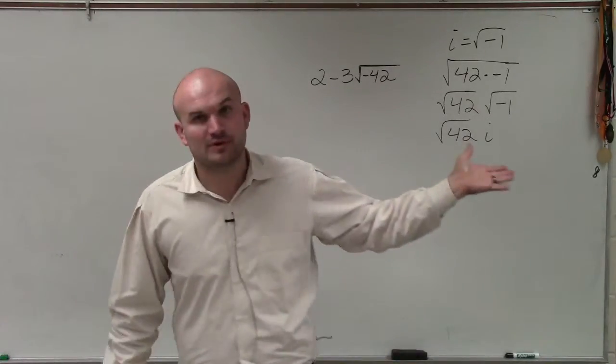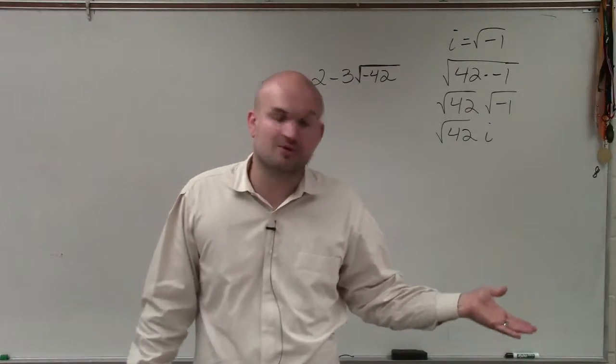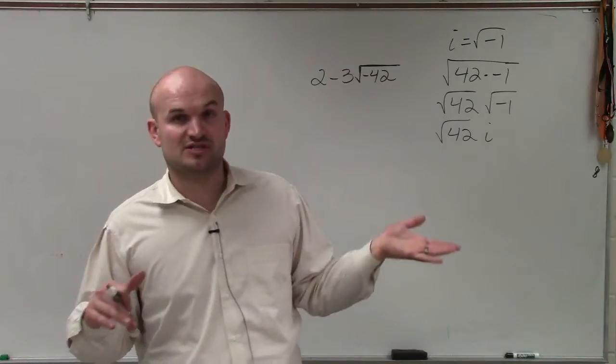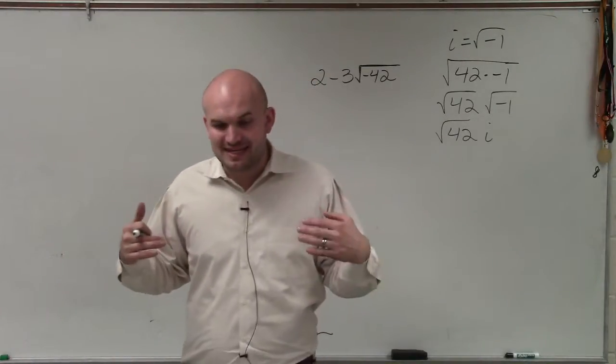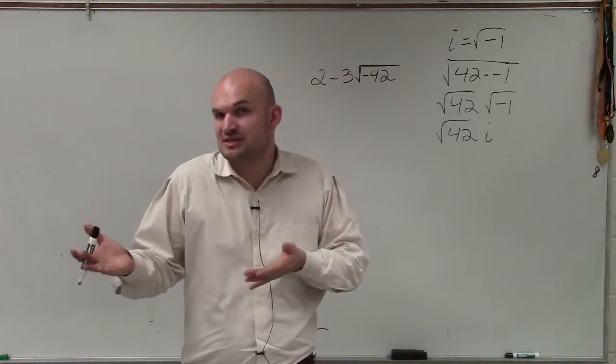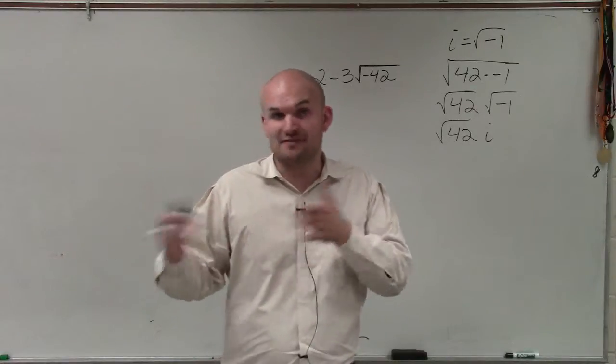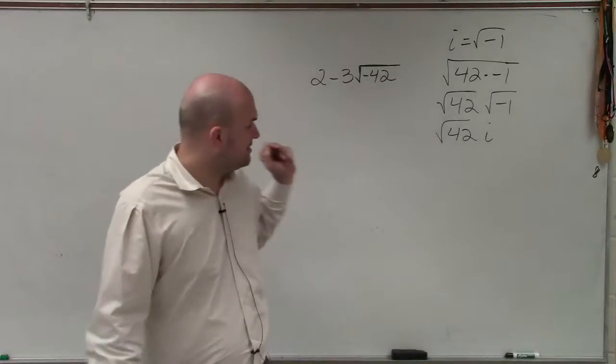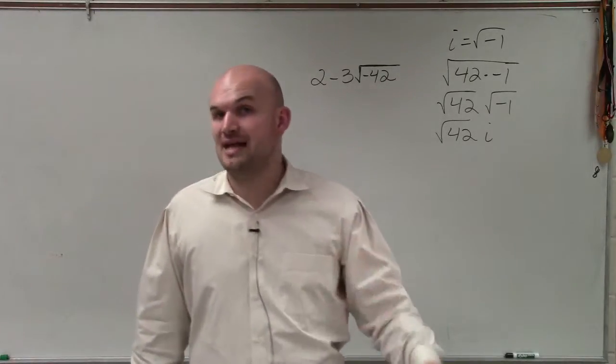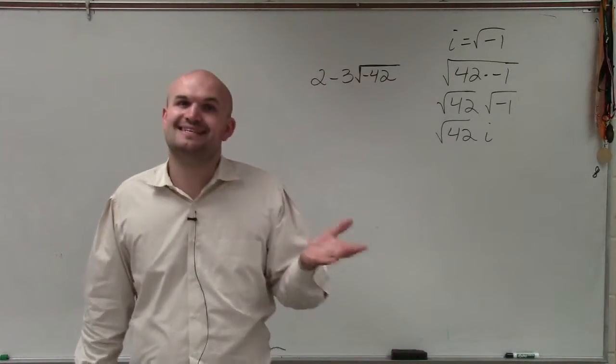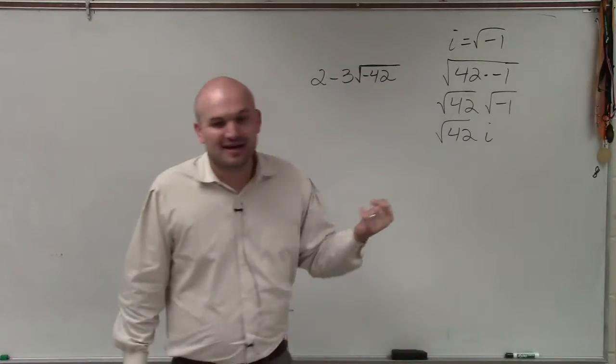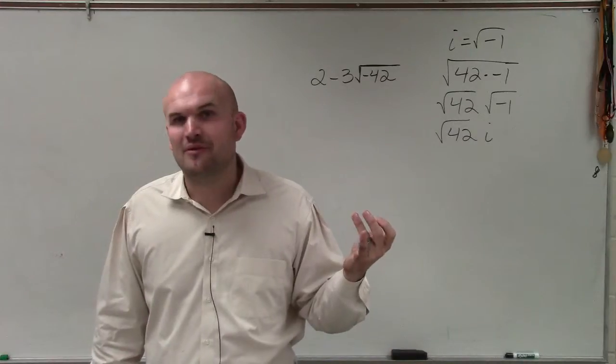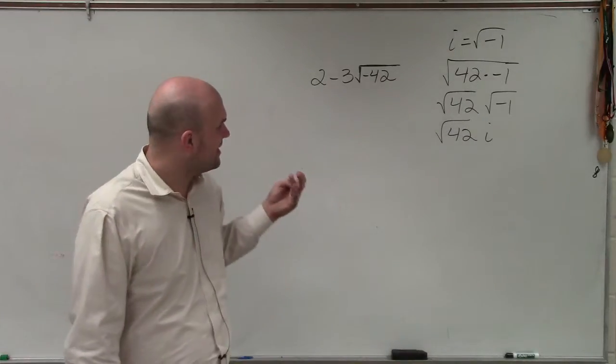36 doesn't divide into 42, so then I go to the next one, which is 25. Well, 25 does not evenly divide into 42. So I go to the next square number, which is 16. Remember, 16 is a square number because 4 times 4 is 16, 25 is square because 5 times 5, 36 is a square number because 6 times 6. Well, 16 does not evenly divide into 42, so then I go to 9. And unfortunately, 9 does not evenly divide into 42. So then that brings me to 4, and 4 does not evenly divide into 42.